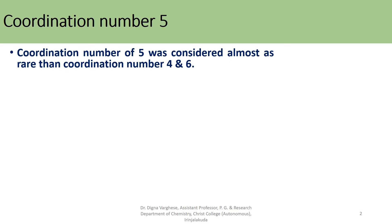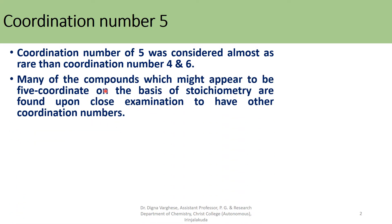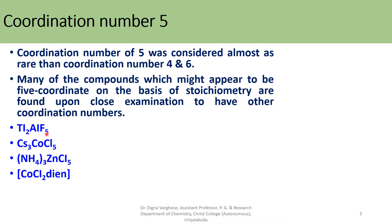Coordination number 5 was considered almost rarer than coordination number 4 and 6. Many of the compounds which might appear to be 5-coordinate on the basis of stoichiometry are found upon close examination to have other coordination numbers. You can see some examples given here.